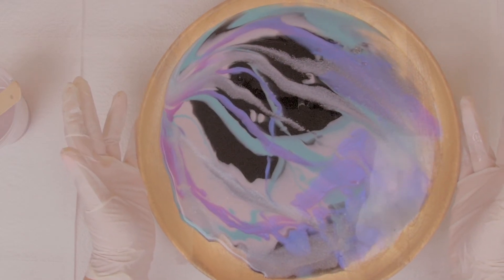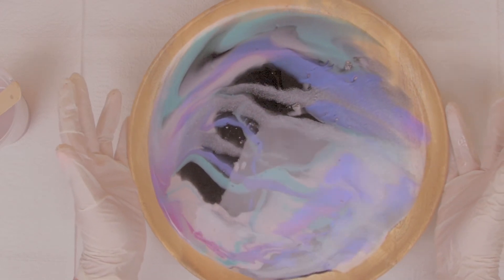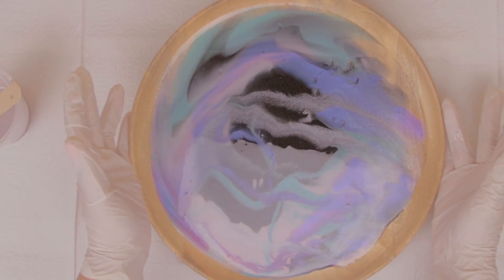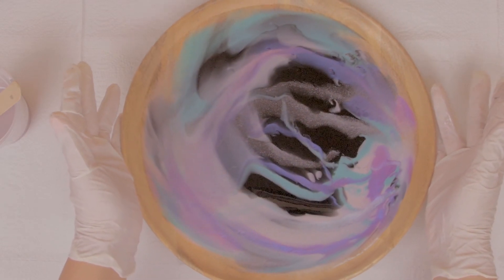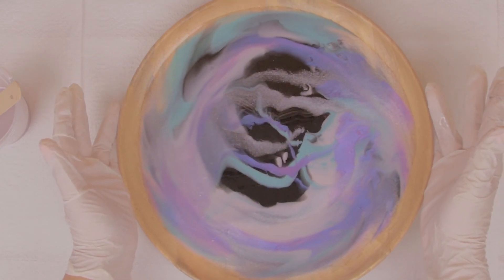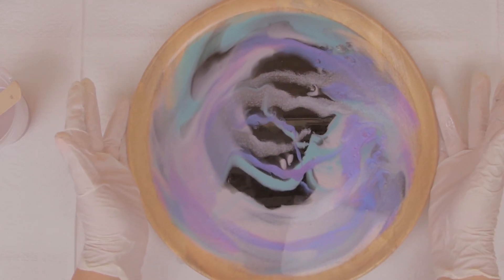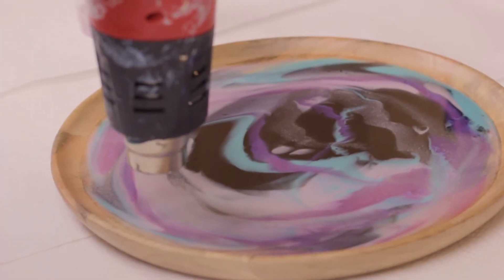And then you go in with a heat gun and we pop all the bubbles. Be careful not to burn the resin with this because once I was making this table and I accidentally burned some resin. That was my first attempt to make a seven-foot large table. I'm so stupid.